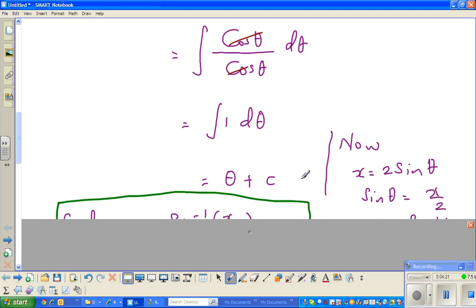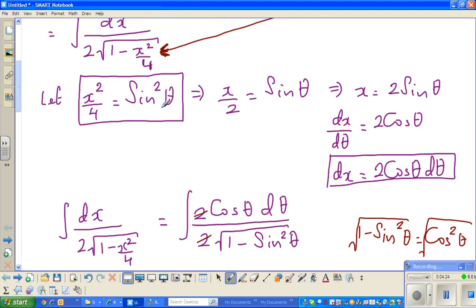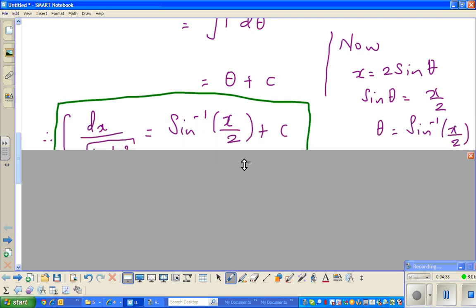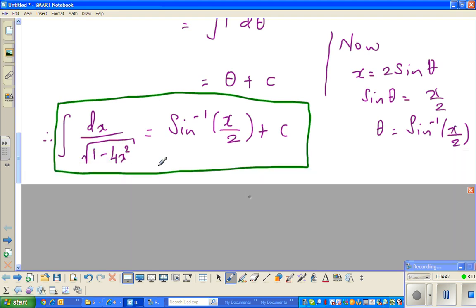Let us go back. X is 2 sine theta. I have rewritten this. So now, if x is 2 sine theta, sine theta is x over 2. If you take sine inverse of both sides, theta is sine inverse of x over 2. So the ultimate answer is integration of dx over square root of 4 minus x squared is sine inverse of x over 2 plus c.